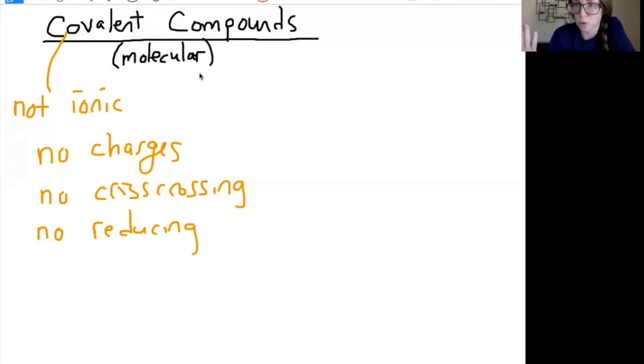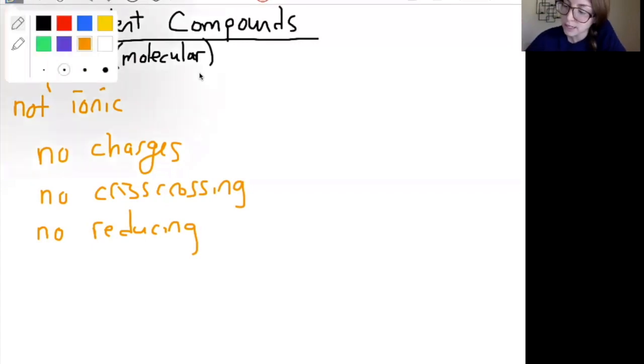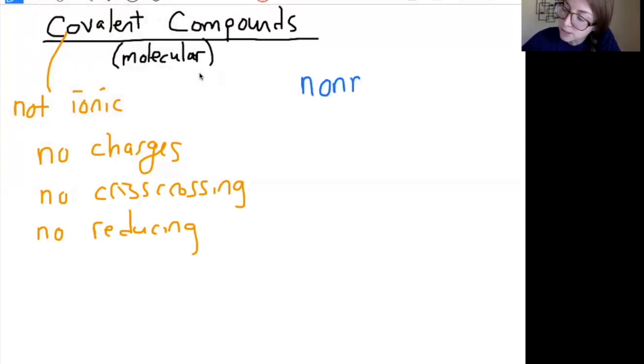How do we know if we're working with a covalent compound is a good first question. We are working with nonmetals only. Remember that the nonmetals are everything to the right of the staircase. Even though a lot of our polyatomic ions are made up of nonmetals, they are ions. We are not dealing with anything ionic here. So no polyatomic ions. If you see a polyatomic ion, it's an ionic compound.